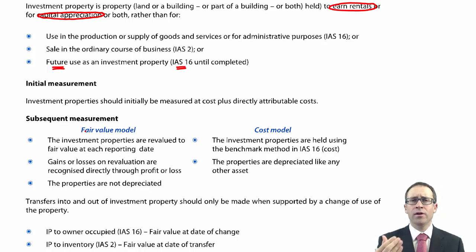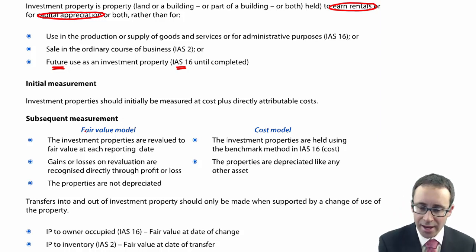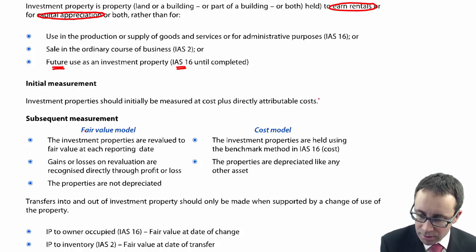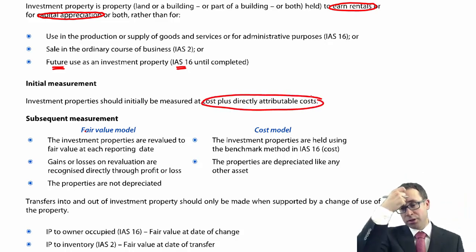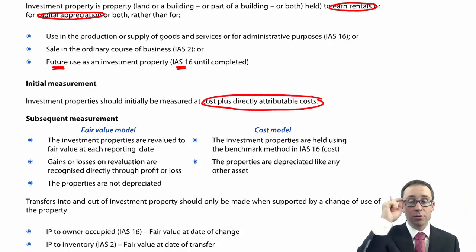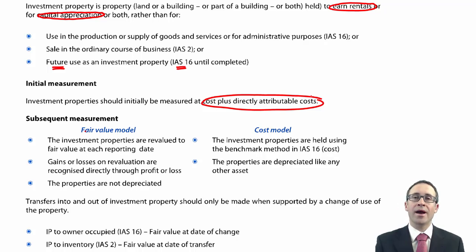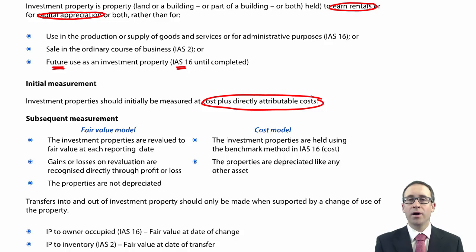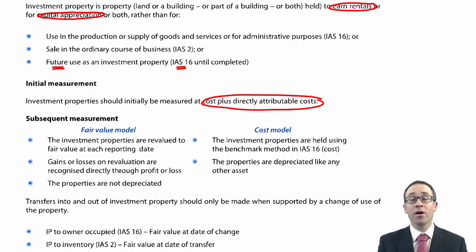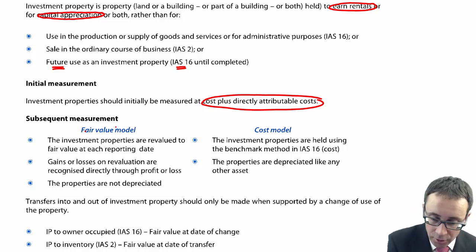Hopefully we're getting the theme in terms of initial measurement and subsequent treatment. Initial measurement, similar to IAS 16, is cost plus directly attributable costs. When thinking about land or buildings, you include any property taxes you have to pay on purchase. When we subsequently measure it, we have two models: the fair value model and the cost model.